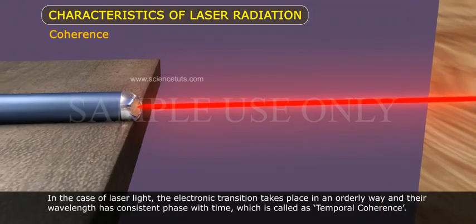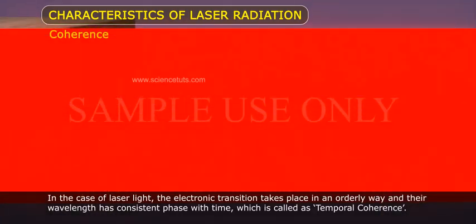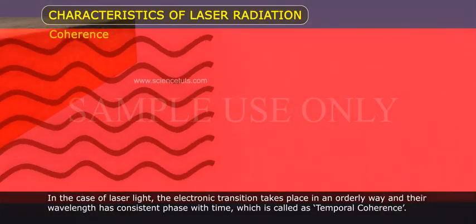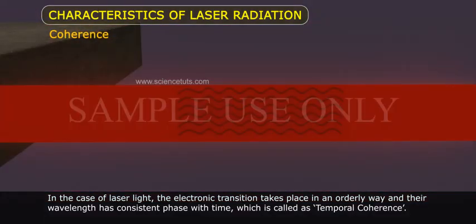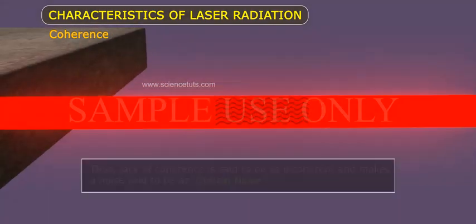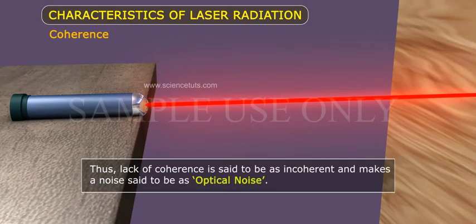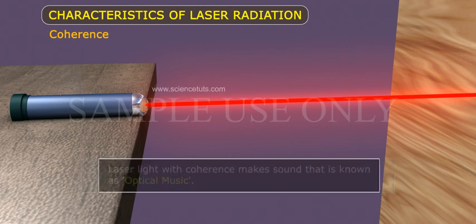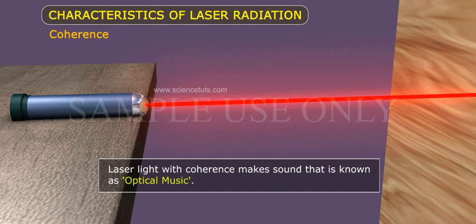In the case of laser light, the electronic transition takes place in an orderly way, and their wavelength has consistent phase with time, which is called temporal coherence. Thus, lack of coherence is said to be incoherent and makes noise, called optical noise. Laser light with coherence makes sound, known as optical music.